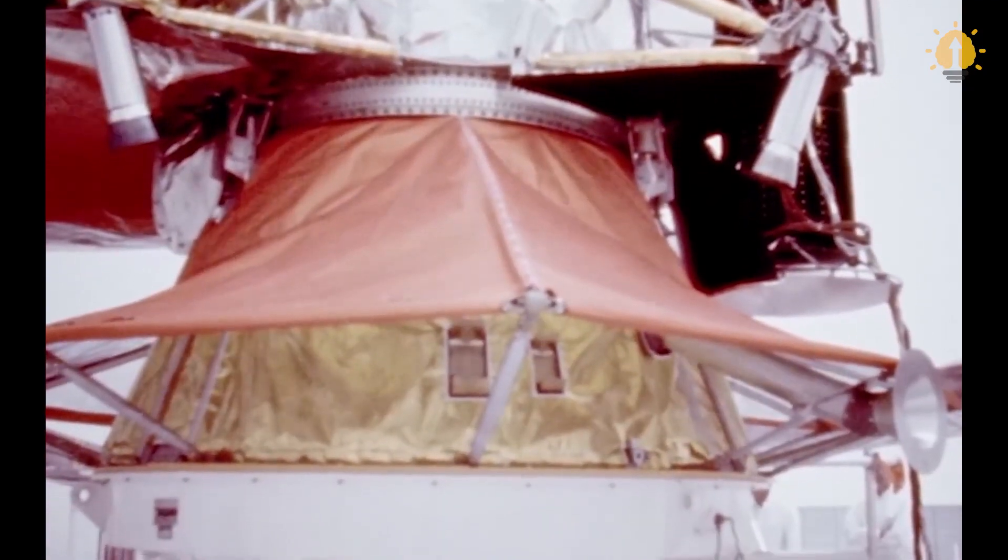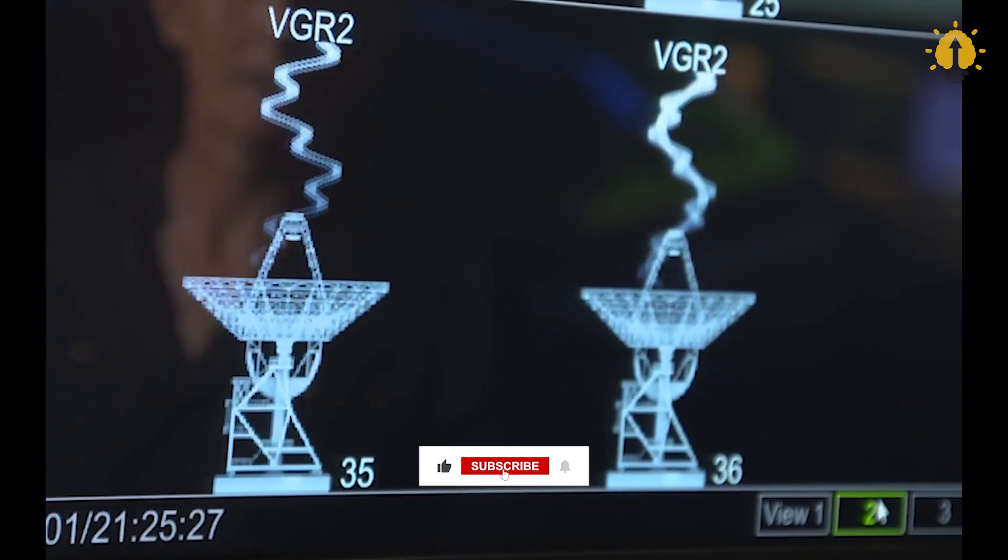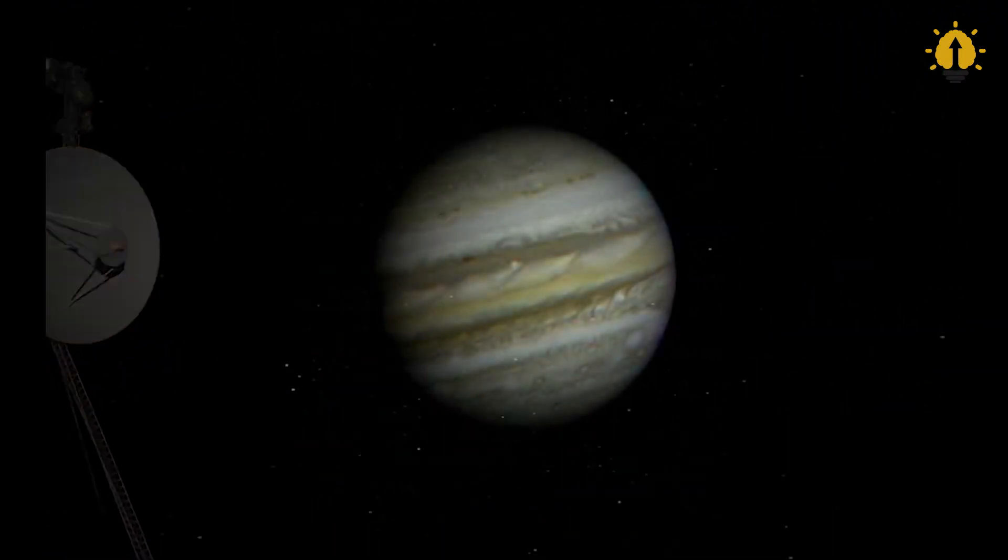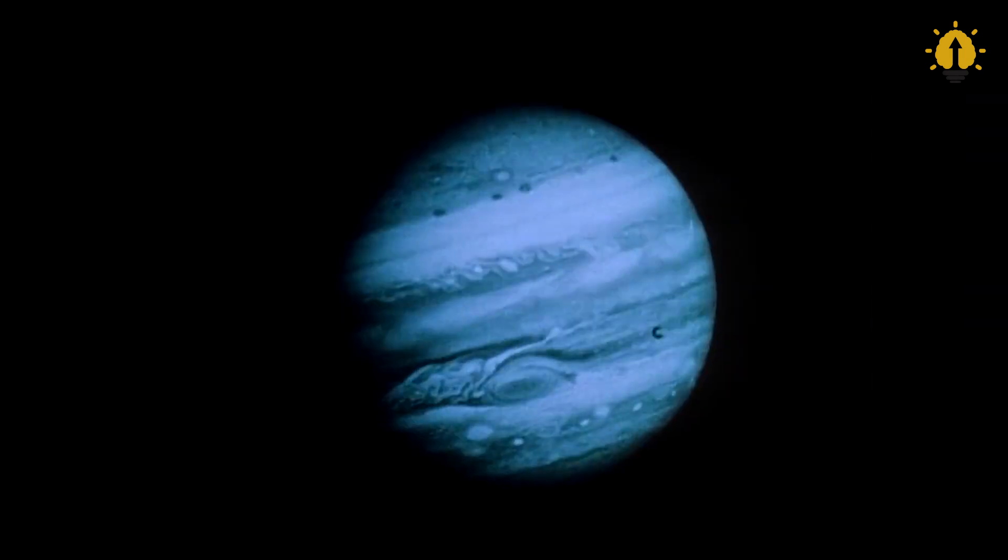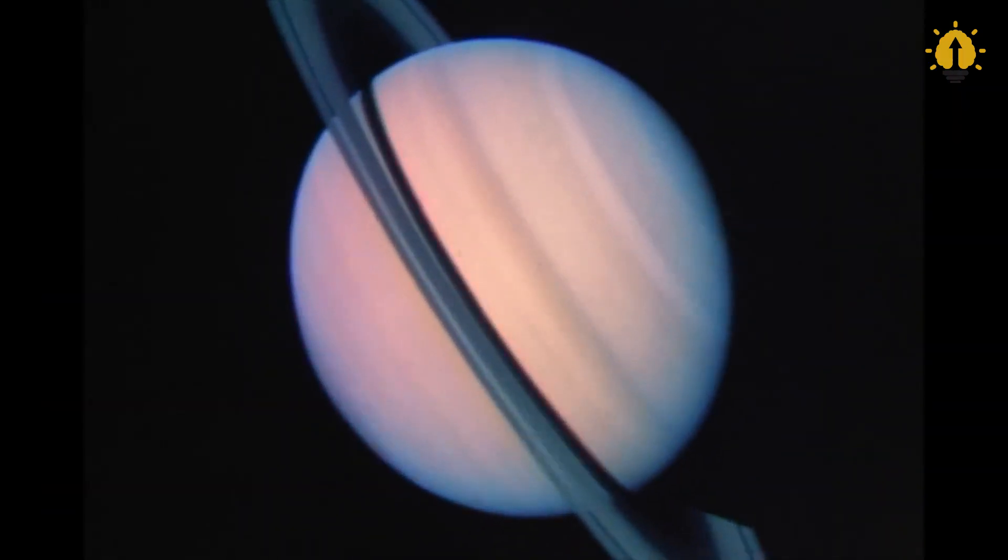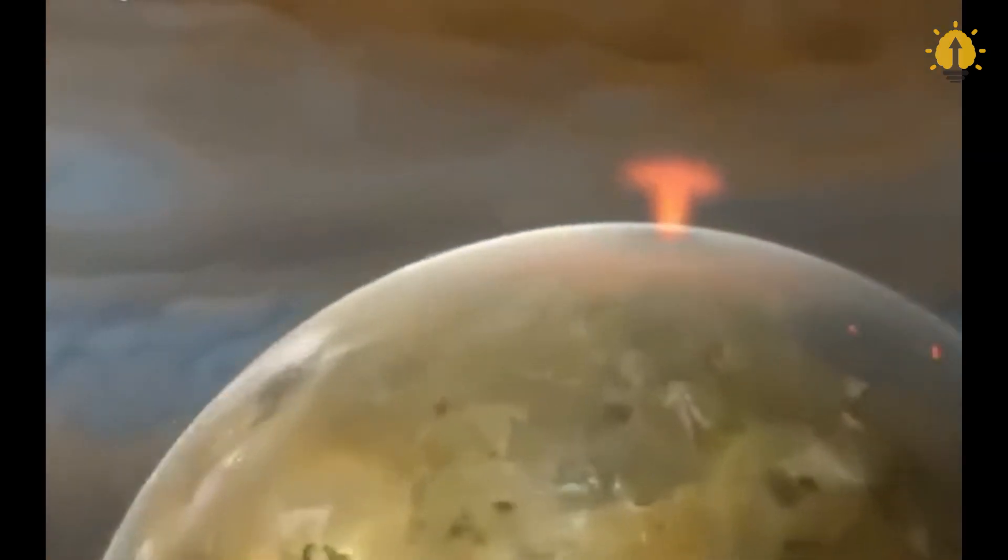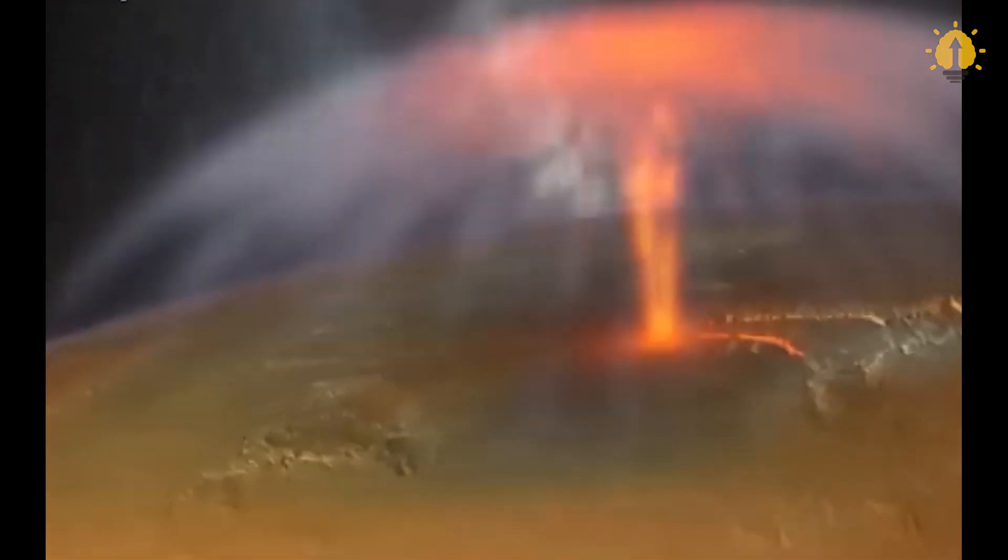Their impressive imaging capabilities began to astound scientists and the public even before their encounters with the outer planets. The spacecraft started transmitting images of Jupiter while still several months away from the planet. These early images, revealing the gas giant's swirling clouds and iconic great red spot, delighted audiences at NASA's Jet Propulsion Laboratory. However, it was the discovery of active volcanoes on Jupiter's moon, Io, that truly set the stage for the Voyager's groundbreaking observations.